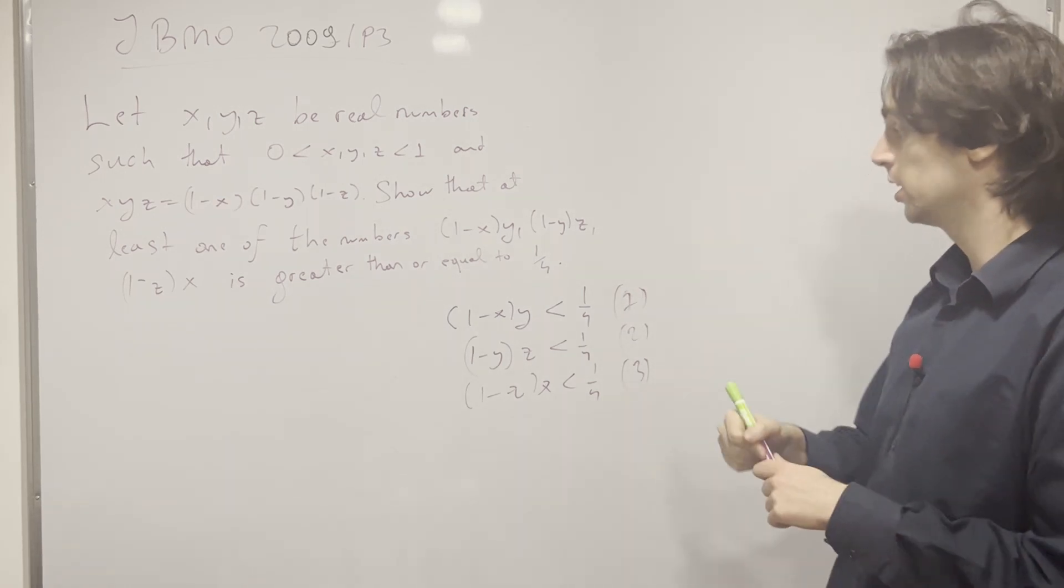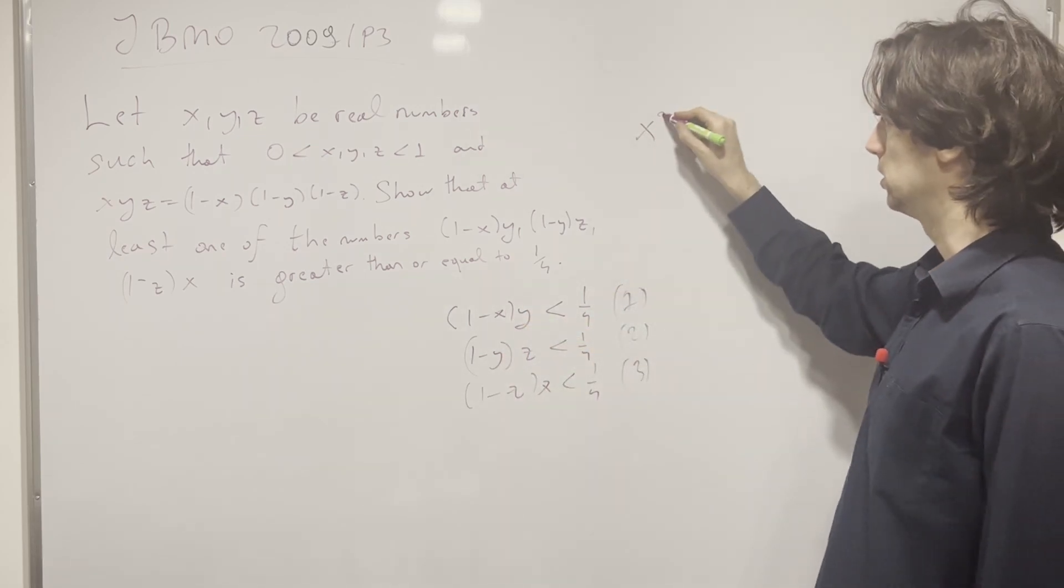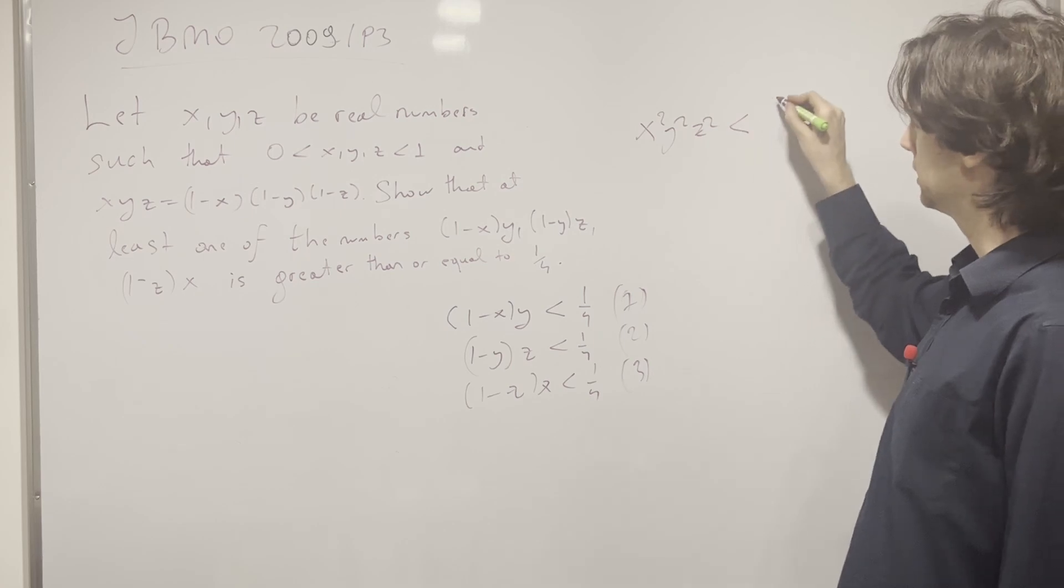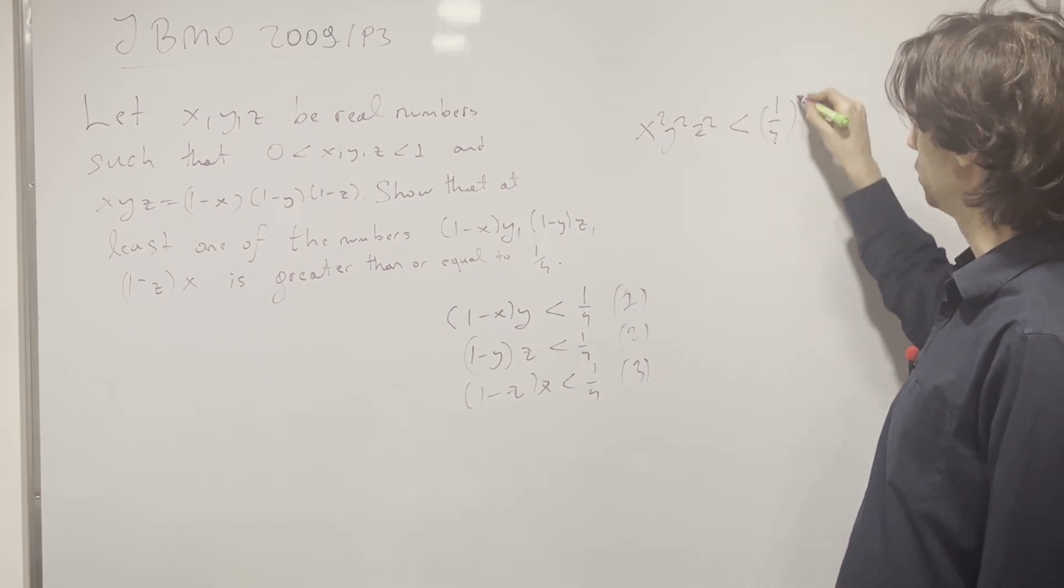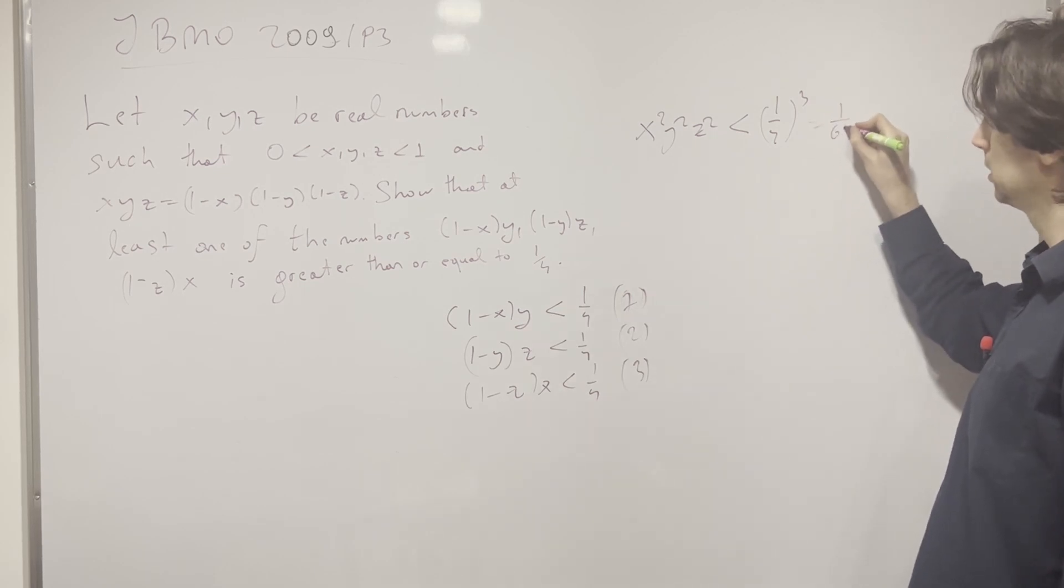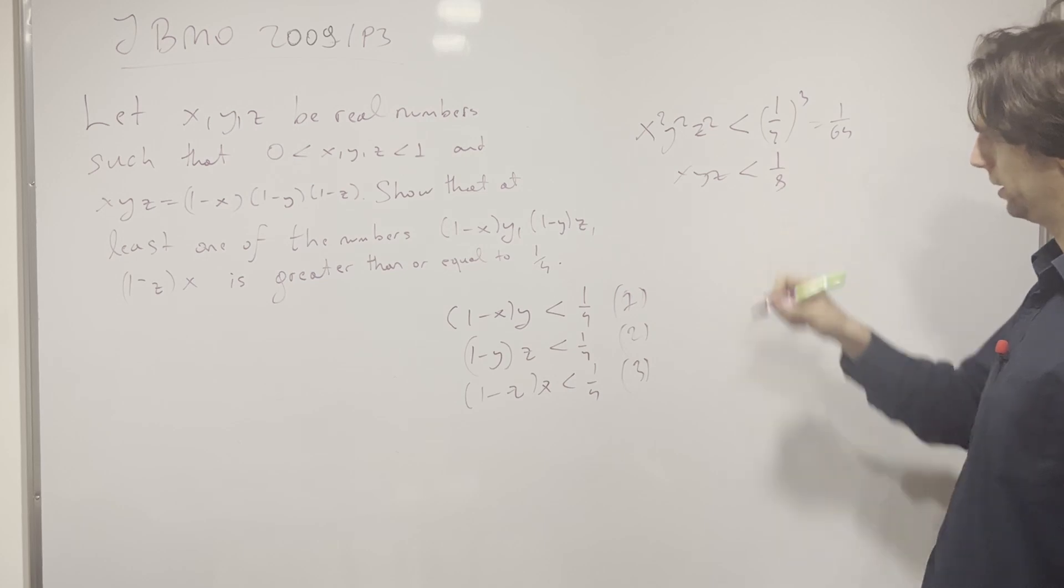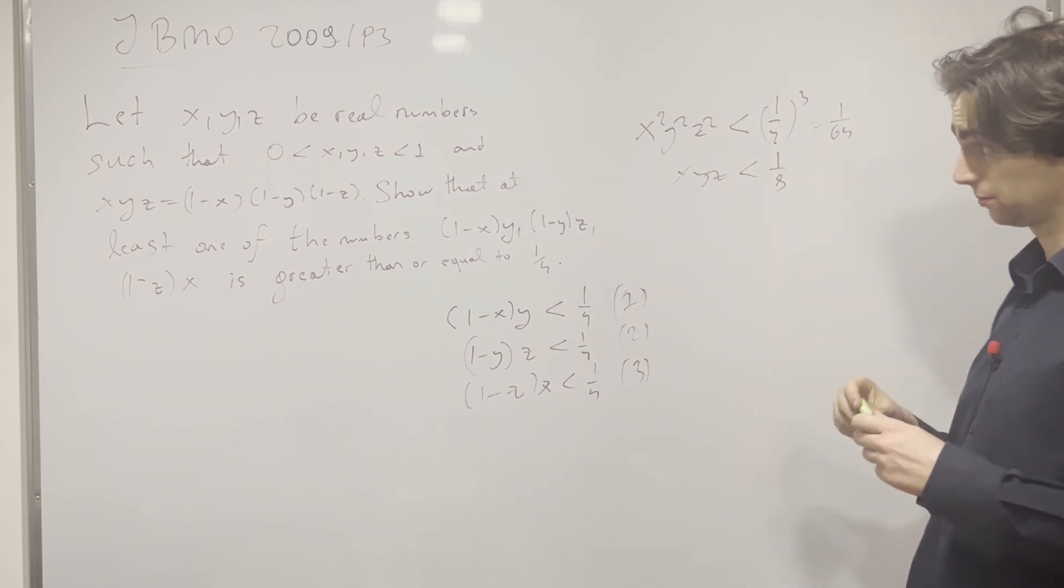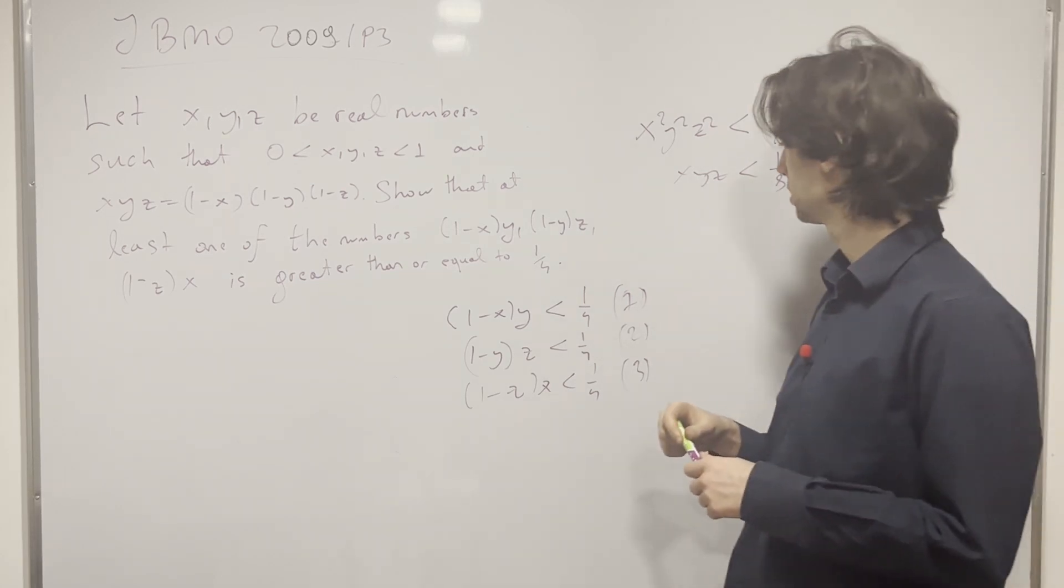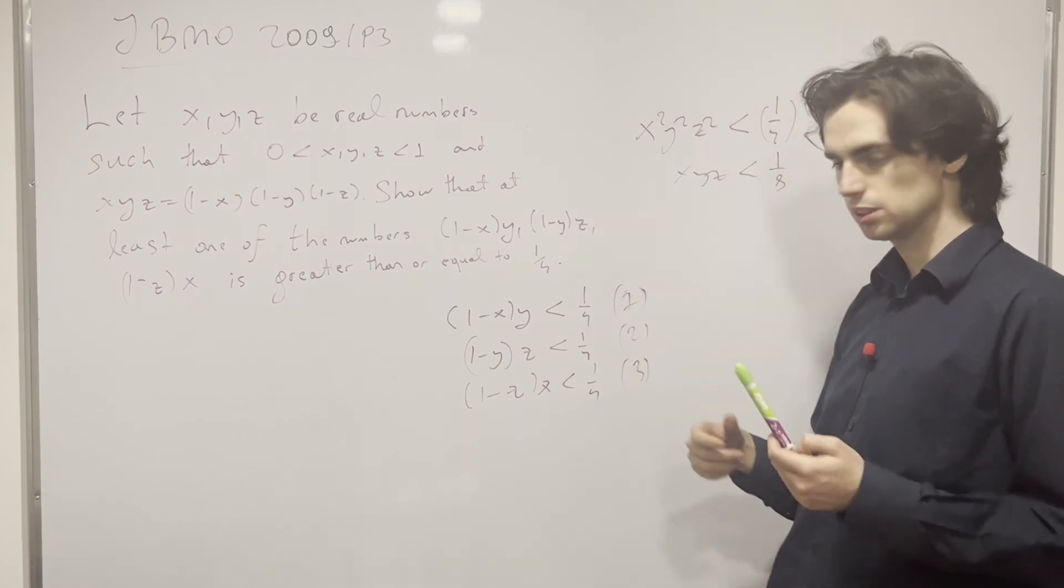Anyway, let's multiply these together and I'm going to write x squared, y squared, z squared immediately. We get this is less than 1 over 4 cubed, which is equal to 1 over 64. So we have x, y, z is less than 1 over 8. Okay, so now we know that x, y, z is less than 1 over 8.